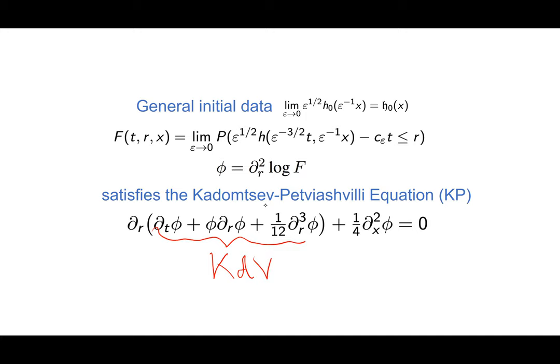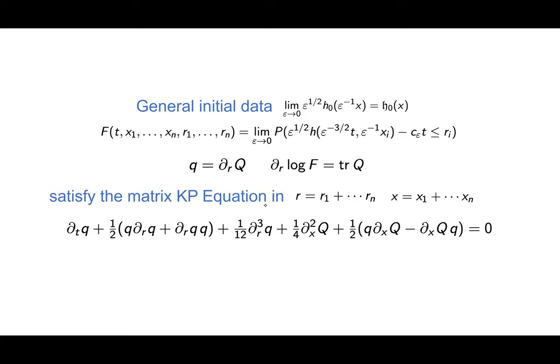The next step is to look at multi-dimensional distributions. We fix time T and want the multi-point distribution starting from some general initial data. We look at the n-dimensional distribution F(T, X₁, …, Xₙ, R₁, …, Rₙ). These can be thought of as transition probabilities because we have general initial data, and endpoint distributions are enough — that's all the information one needs.